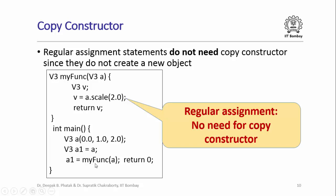As opposed to those cases where a copy constructor is needed, consider a simple assignment statement where the object on the left-hand side has already been created. Here, we are not creating a new object by copying another — so a normal assignment statement does not require a copy constructor. It simply copies all data members from the right-hand side object to the corresponding data members of the left-hand side. Copy constructors are invoked only when a new object is being created by copying another object of the same class.